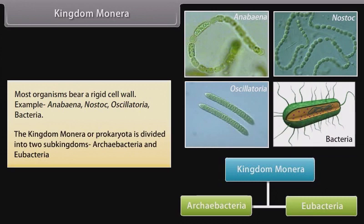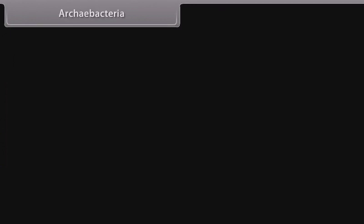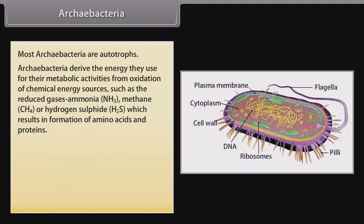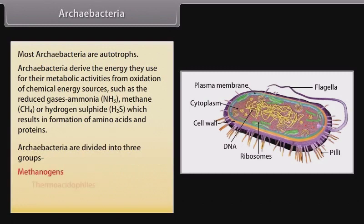Archaebacteria: most Archaebacteria are autotrophs. They derive the energy used for their metabolic activities from oxidation of chemical energy sources such as reduced gaseous ammonia (NH3), methane (CH4), or hydrogen sulfide (H2S), which results in the formation of amino acids and proteins. Archaebacteria are divided into three groups: methanogens, thermoacidophiles, and halophiles.